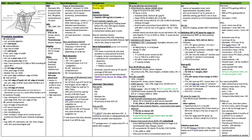The second arm was hyperfractionation: 81.6 Gy in 68 fractions at 1.2 Gy BID. The third arm was accelerated split course: 67.2 Gy at 1.6 Gy BID with a two-week break halfway through. The fourth arm was accelerated fractionation with a concomitant boost: 54 Gy in 30 fractions with BID 1.5 Gy for the last 12 fractions — totaling 54 + 18 = 72 Gy.